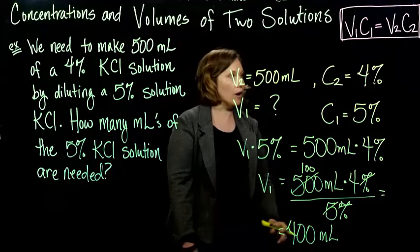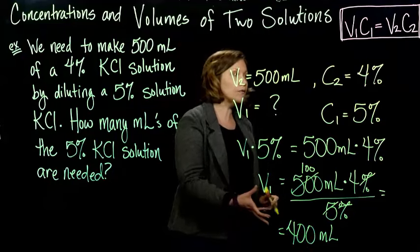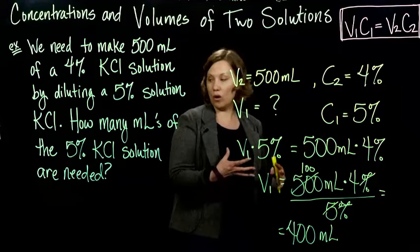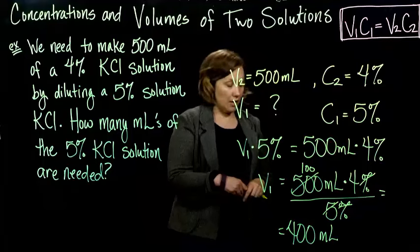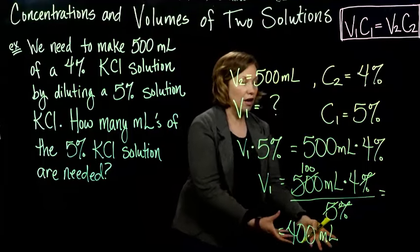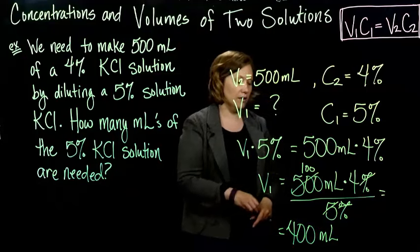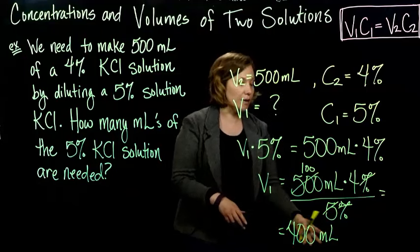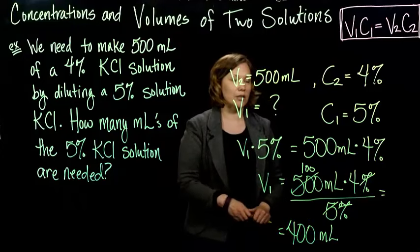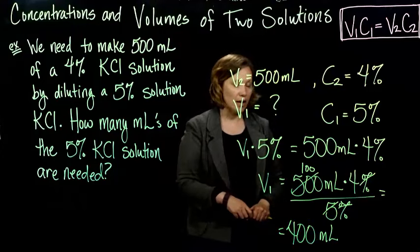So I need 400 milliliters of the 5% solution, so how much of the solvent do I need? I need just 100 milliliters to add to my 400 milliliters to make 500 milliliters. And so that's it.